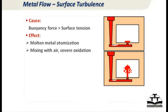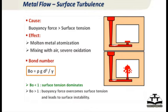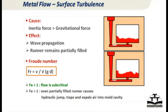The next number, comparing gravity and surface tension, is called the Bond number. Less than 1 is good; more than 1 is going to be a problem — you start getting surface breakup, disturbances, oxidation, and jetting. The last number is the Froude number, comparing inertia and gravitational force. If it is more than 1, even a partially filled runner can create an air pocket that gets pushed into the metal cavity, causing a blow hole or gas porosity.